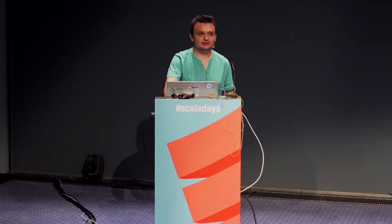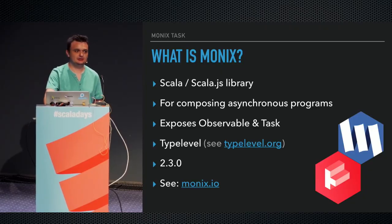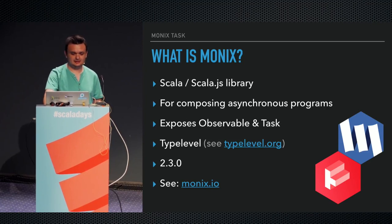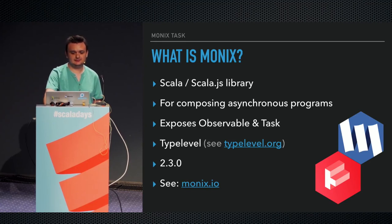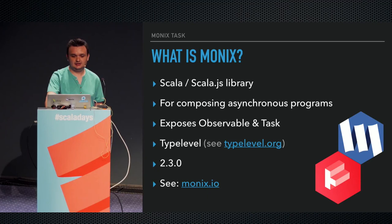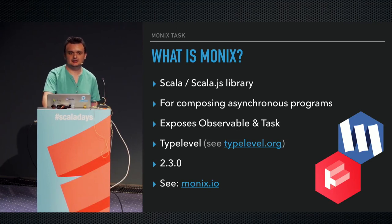I'm here today to talk about Monix's task implementation. To quickly describe Monix, it's a Scala library, cross-compiled — it works with Scala.js in your browser if you want. I really hope that Scala native support will happen soon, but there are some technical challenges there. It exposes observable and task. It's a type-level project with full membership, adhering to certain standards of quality. Currently it's version 2.3, and I hope version 3 will happen soon. Monix.io is the website address, and it has some documentation.